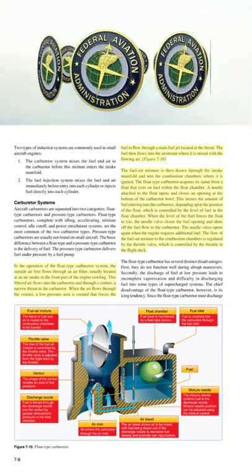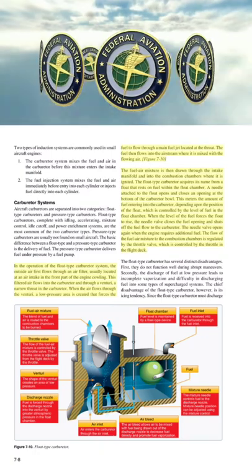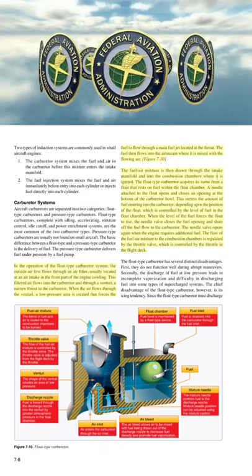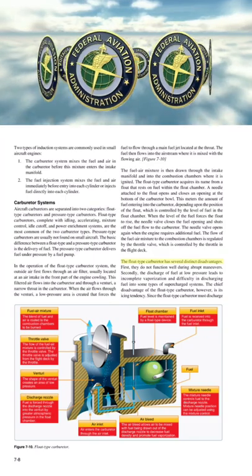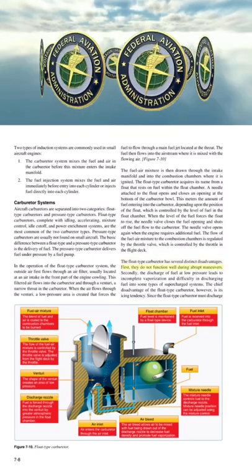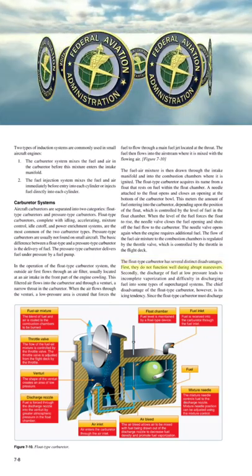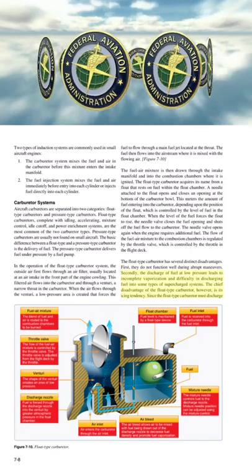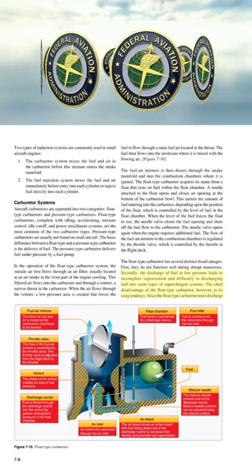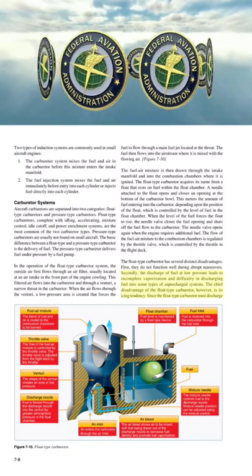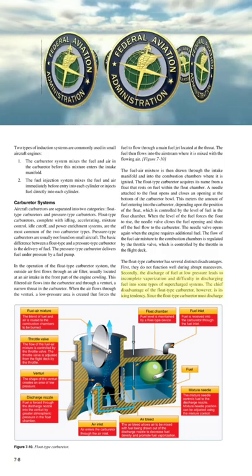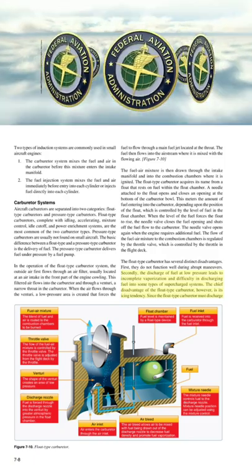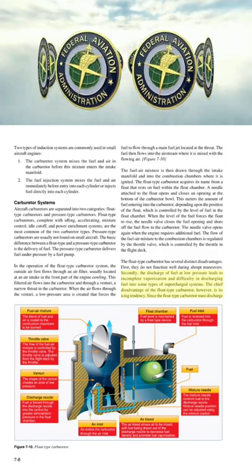The flow of the fuel-air mixture to the combustion chambers is regulated by the throttle valve, which is controlled by the throttle in the flight deck. The float type carburetor has several distinct disadvantages. First, they do not function well during abrupt maneuvers. Secondly, the discharge of fuel at low pressure leads to incomplete vaporization and difficulty discharging fuel into some types of supercharged systems. The chief disadvantage of the float type carburetor, however, is its icing tendency.